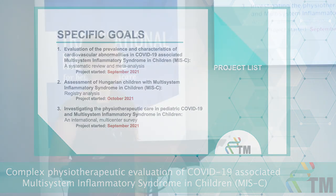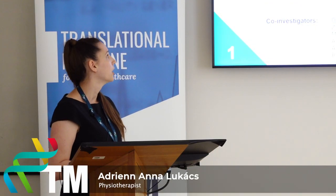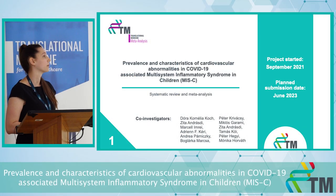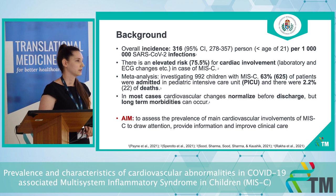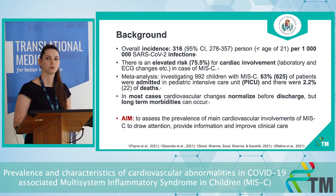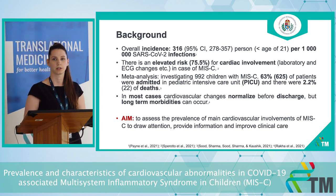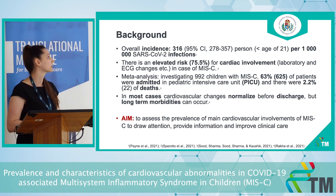We conducted three different studies to focus on the main parts of this disease. The first one is about the prevalence and characteristics of cardiovascular abnormalities in MIS-C. Three to six years after COVID-19 infection, children can develop a multisystem inflammatory response. One of the main problems with this disease is that more than 75% of the children will experience some kind of cardiovascular problem during their hospitalization.